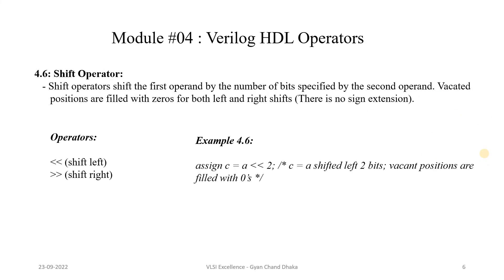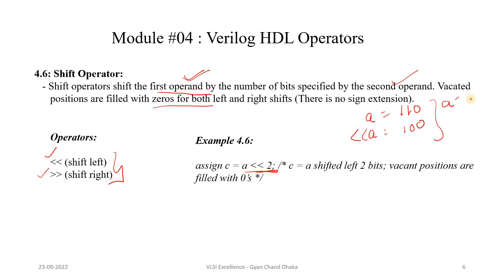The next type of operator is the shift operator. The shift operator shifts the first operand by the number of bits specified by the second operand. Vacated positions are filled with 0s for both left and right shifts. For example, if we assign C = A << 2 and A = 3'b111, then the left-shifted result C will be 3'b100 (shifted left by 2, vacated bits filled with 0).